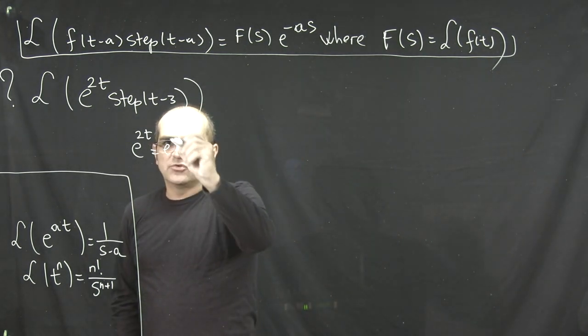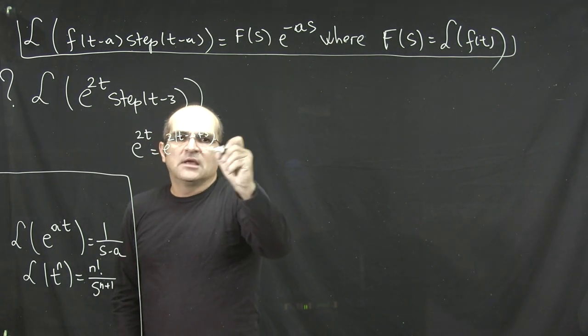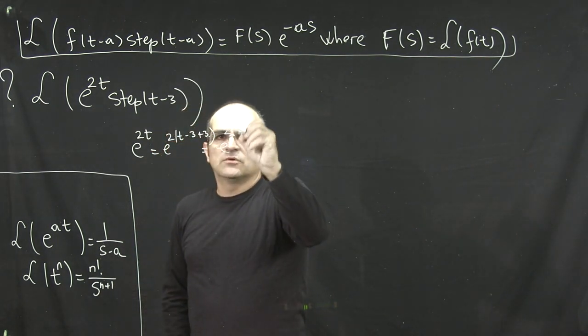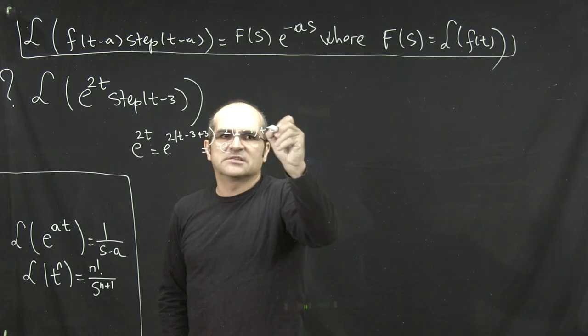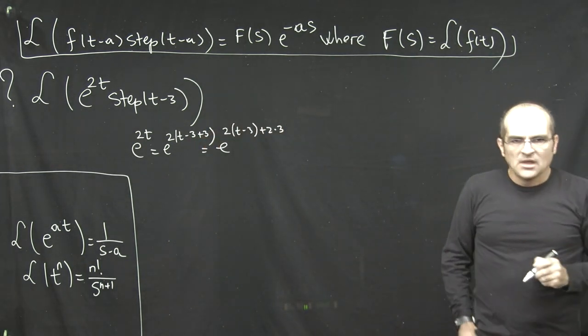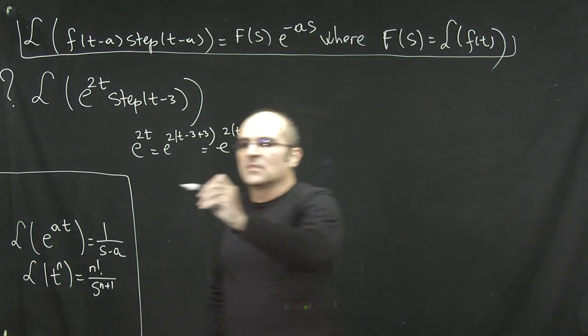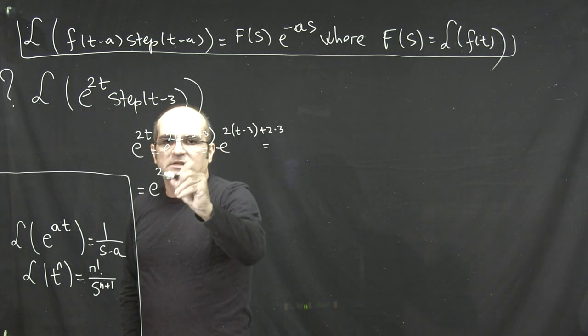Inside this multiplication, you subtract and add 3. And then, of course, you distribute the 2 on the exponent. And this is where I put, so this should be 6, right, when you distribute the 2.